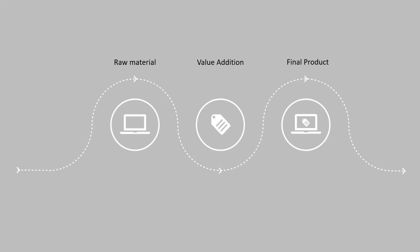From SAP's perspective, we treat the entire subcontracting process as similar to a normal purchase order or the P2P cycle with a small difference. We consider this entire process as a receipt of the final product from the subcontracting vendor. We raise a purchase order with the material as the final product and the vendor as the subcontracting vendor. Before we post the goods receipt, we need to issue the goods from our inventory to the subcontracting vendor. So we post a goods issue, and after the vendor adds value, we post the goods receipt and the invoice receipt for the final product.